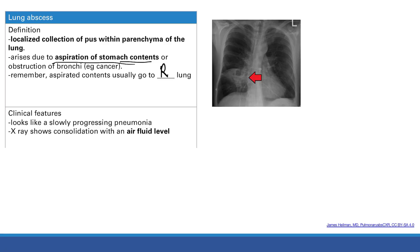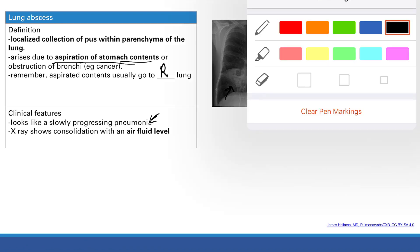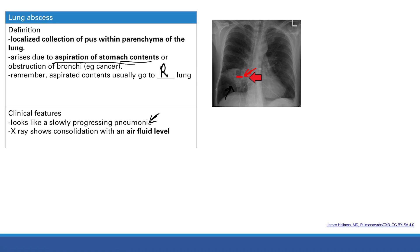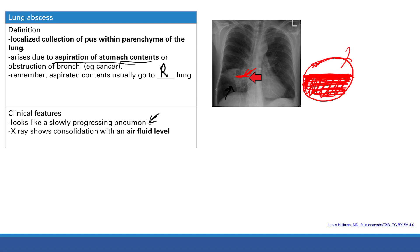Aspirated contents most commonly go to the right side of the lung due to bronchial anatomy. Clinically, it presents like a slowly progressing pneumonia — fever, malaise, shortness of breath, and cough with sputum. On X-ray, you'll see an air-fluid level: the pus settles to the bottom creating a flat line, with dark air above and gray fluid below. That air-fluid level is characteristic of an abscess.